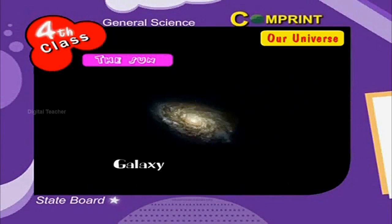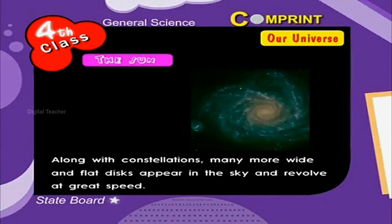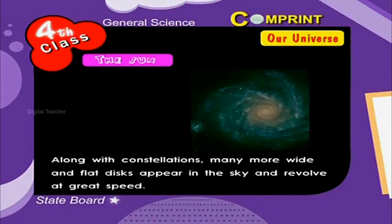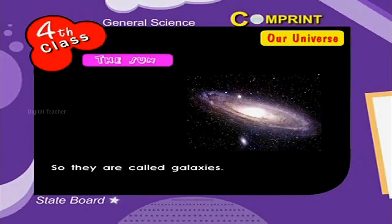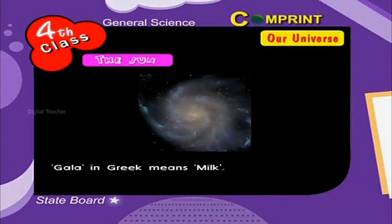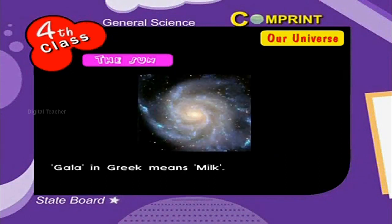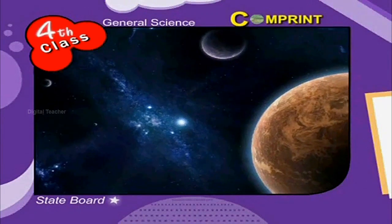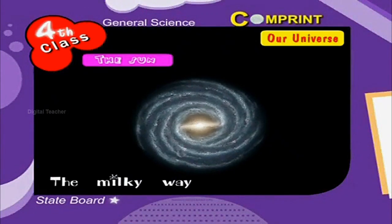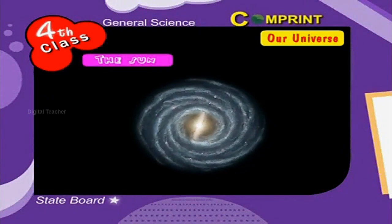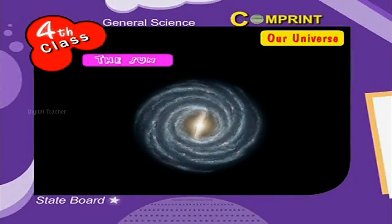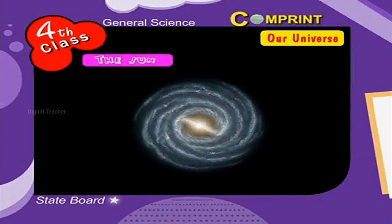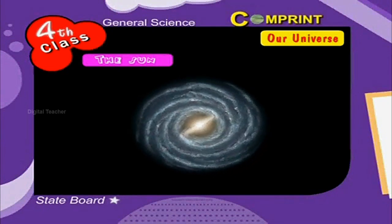Along with constellations, many wide and flat disk-like formations appear in the sky and revolve at great speed. They appear like flowing milk, so they are called galaxies — 'Gala' in Greek means milk. There are lots of such galaxies in the universe. The thick mass of stars appearing across the sky is called the Milky Way. Our solar system lies in the Milky Way, which contains about 10,000 crore stars.